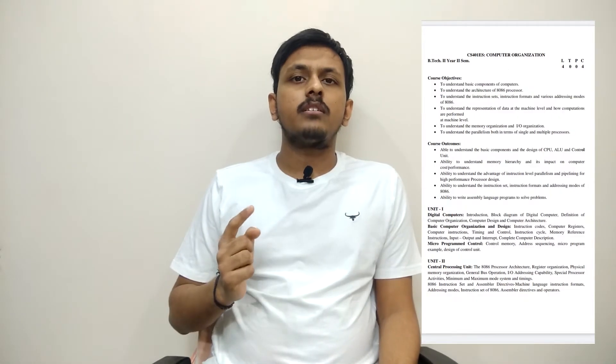Now coming to the second year, second semester subjects. The first subject is Computer Organization. This subject is not totally related to CSE but has some aspects of the ECE side. Chapter one is about digital computers. Chapter two is the Central Processing Unit. Chapter three is Assembly Language. Chapter four is Computer Arithmetic. Chapter five is Memory Organization. You'll get a basic introduction to Assembly Level Language, learn how the CPU works and its internal parts, how memory is stored in RAM and ROM, and the different types of storage.